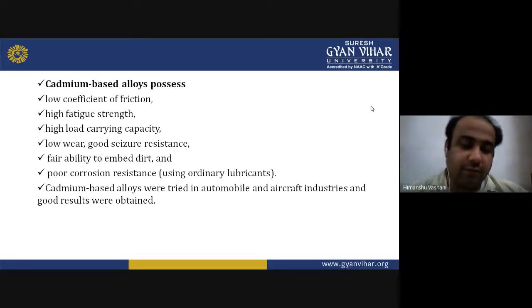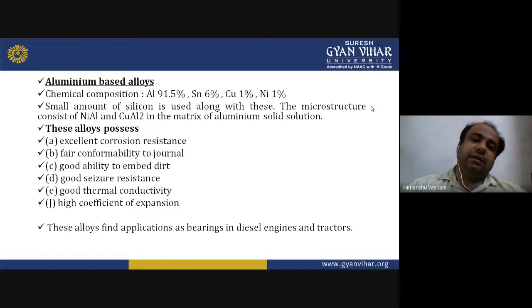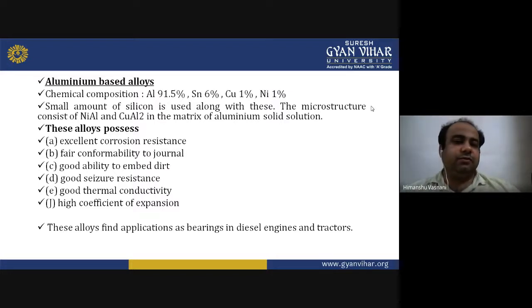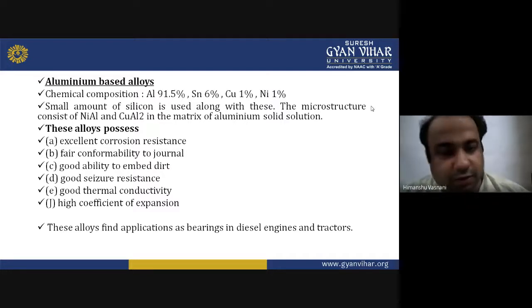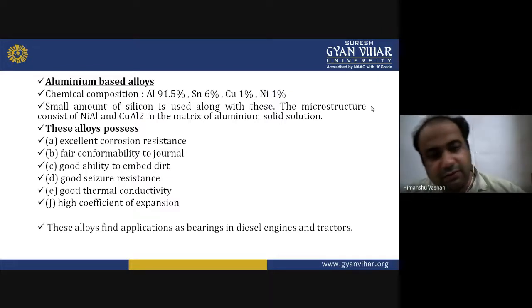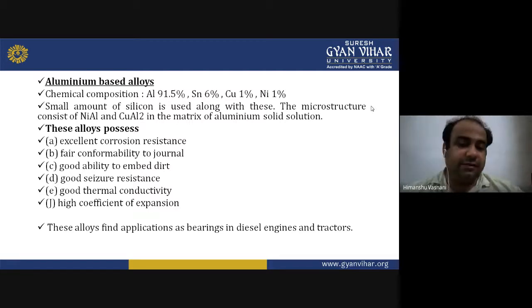Aluminium based alloys have a composition of approximately 91.5% aluminium, 6% tin and around 1% copper, with small amounts of silicon. The microstructure consists of Ni and Cu compounds in a matrix of aluminium solid solution. These alloys possess excellent corrosion resistance, good conformability, good ability to embed dirt, good seizure resistance, good thermal conductivity and high coefficient of expansion. They find applications as bearings in diesel engines and tractors.